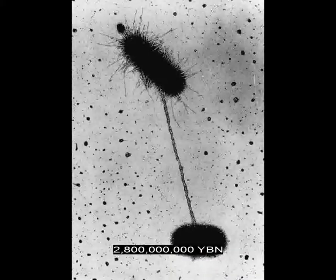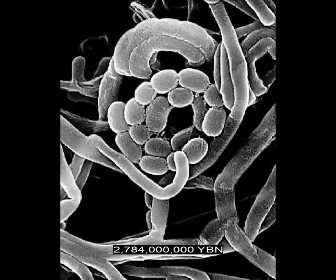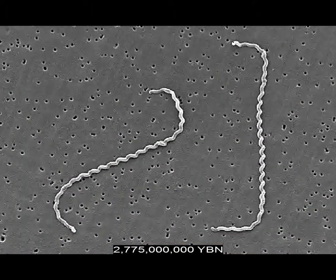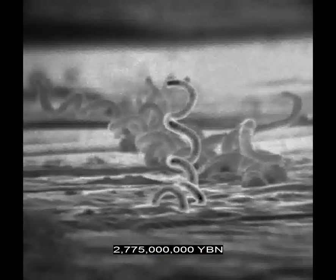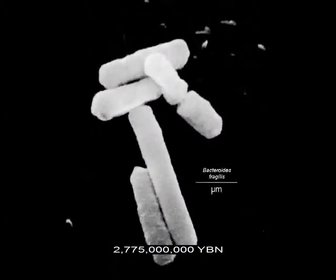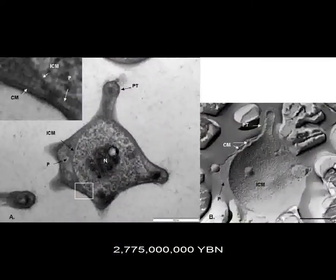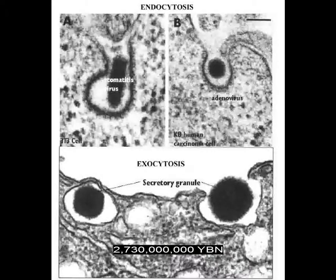Gender and sex conjugation evolve in bacteria. Bacteria Planctomycetes. Bacteria Actinobacteria — source of streptomycin. Bacteria Spirochetes — syphilis, Lyme disease. Bacteria Bacteroidetes. Bacteria Chlamydiae. Bacteria Chlorobi — green sulfur bacteria. Bacteria Verrucomicrobia. Endo- and exocytosis evolve — cells can now eat each other.